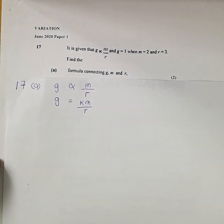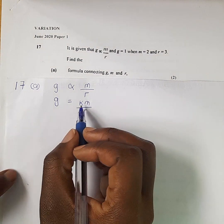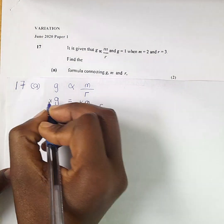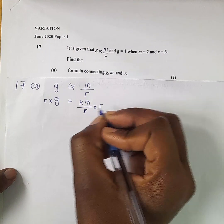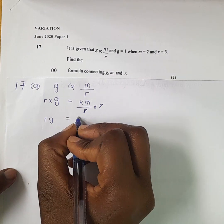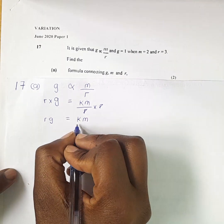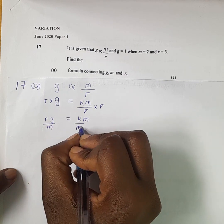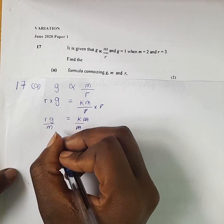Then we need to substitute the given information — G equals 1, M equals 2, and R equals 3 — in order to find the value of K. First, let us make K the subject of formula. We multiply both sides by R so that RG equals KM, then divide both sides by M, giving K equals RG over M.